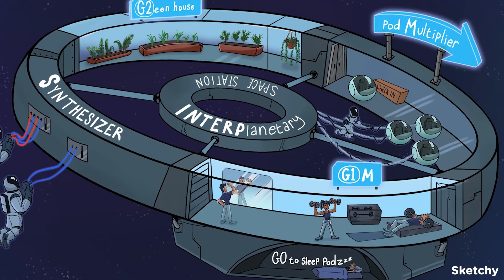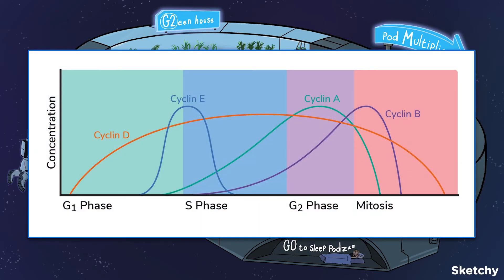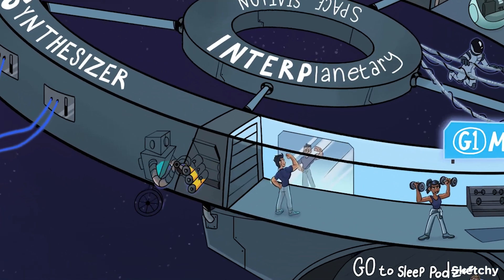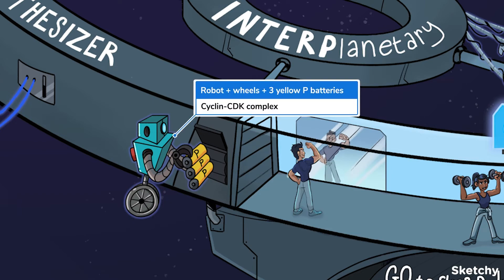Now that we've covered all the checkpoints, let's look at how this process is regulated at the molecular level. The main players are cyclins, cyclin-dependent kinases (CDKs), and tumor suppressor proteins. Cyclins are a group of proteins that control progression of the cell through the cell cycle — their concentrations fluctuate in a cyclical pattern depending on where we are in the cycle. CDKs are continuously expressed and specifically bind to cyclins, generating activated cyclin-CDK complexes. These complexes alter downstream proteins via phosphorylation, allowing the cell to move from one stage to the next.